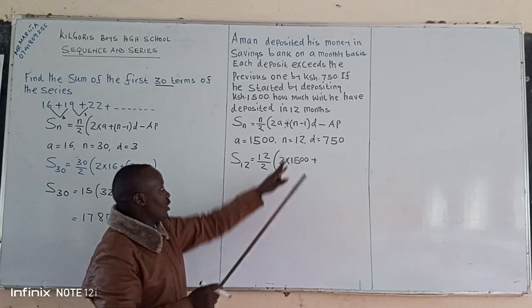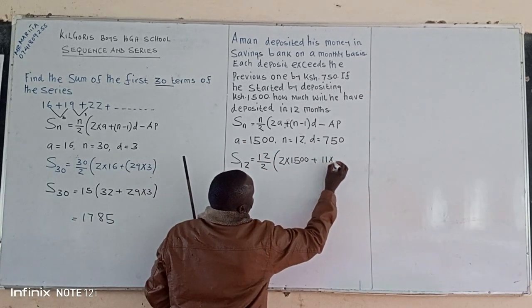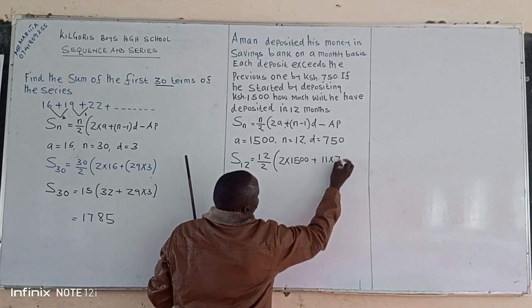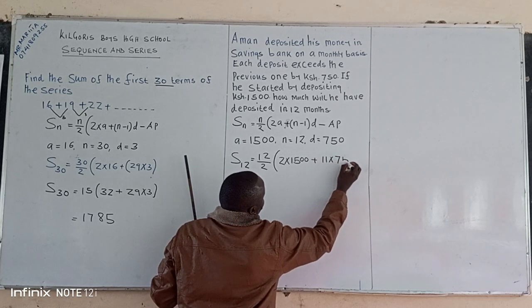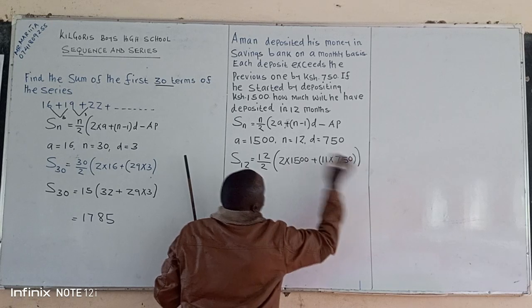Then we have plus n minus 1. n in that case is equivalent to 12, 12 minus 1 we can have 11. This one multiplied by a common difference, this is 750.